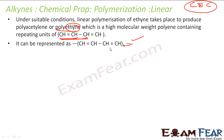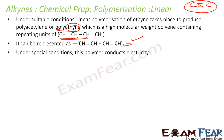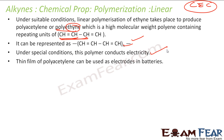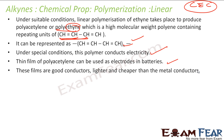If you do a polymerization of ethyne you will get polyethyne. Under special conditions, this polymer also conducts electricity and is used as electrodes in batteries. They are lighter and cheaper than metal conductors, so they are a good substitute for metal conductors.